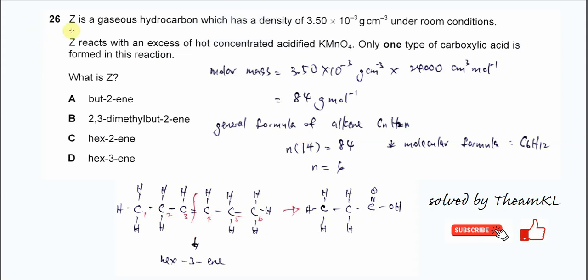Question 26. Z is a gaseous hydrocarbon which has a density of 3.5 × 10⁻³ gm per cm³ under room conditions. Z reacts with excess hot concentrated acidified KMnO4. Only one type of carboxylic acid is formed. So what is the name of this compound Z?